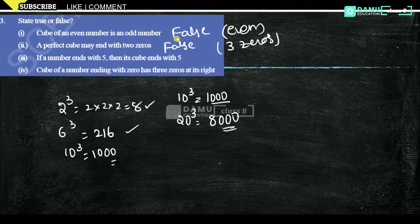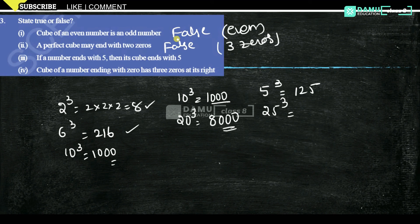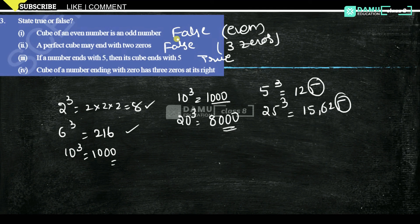Third: if a number ends with 5, its cube ends with 5 — true. For example, 5³ = 125 and 25³ = 15,625, both ending in 5. Fourth: the cube of a number ending with 0 has 3 zeros at its right — true. As seen from examples, such cubes always end with exactly 3 zeros.